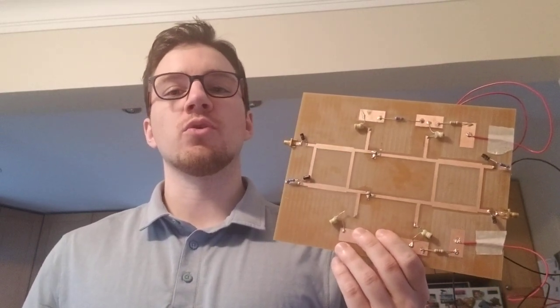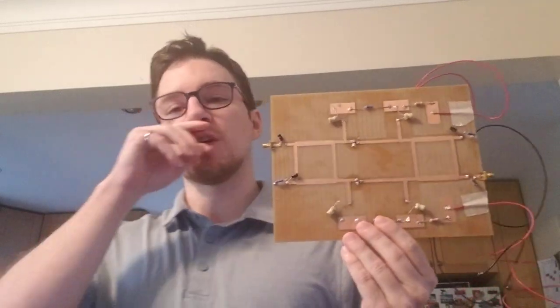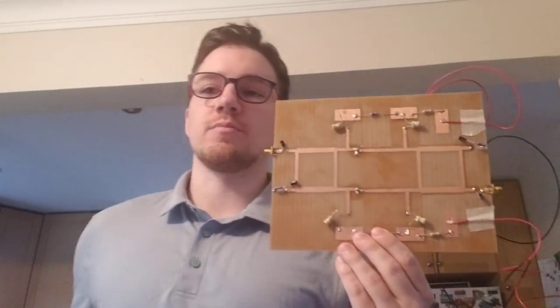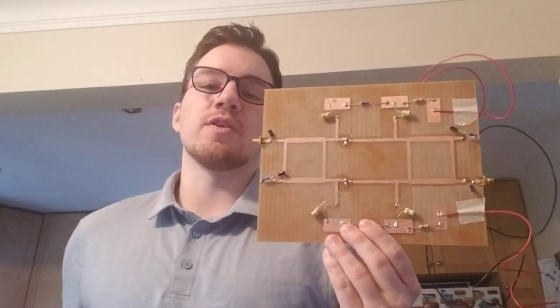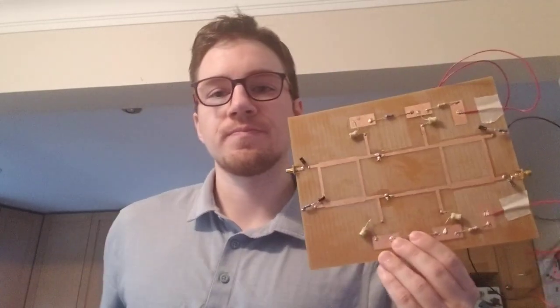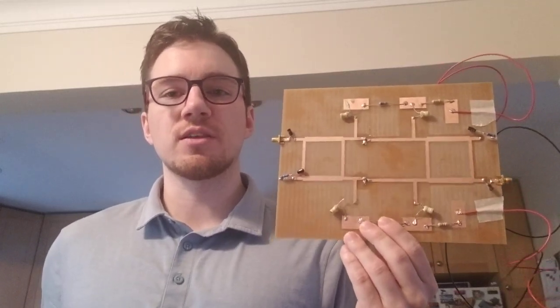So off of DigiKey, we ordered Toshiba transistors which would meet our objectives. Our objectives can be seen in the poster. This is the gain over the bandwidth basically, and the size constraints. And so once we found which transistors would meet our objectives, we then have to design the circuit layout, copper traces.